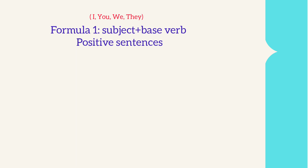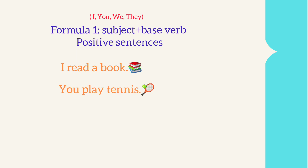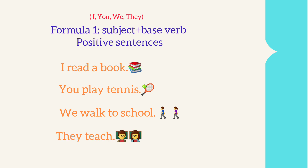Formula 1: Positive sentences. Subject: I, you, we, they — plus base verb. For example: I read a book. You play tennis. We walk to school. They teach.